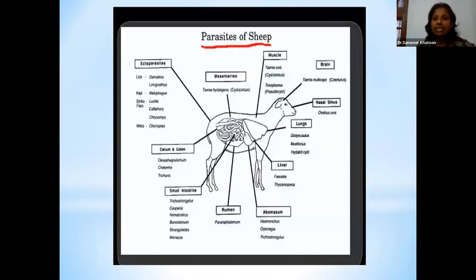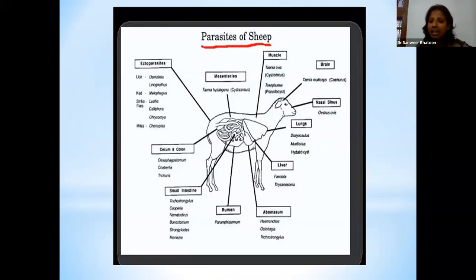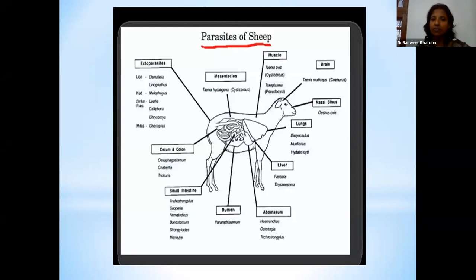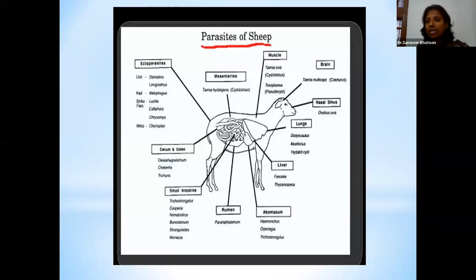Sheep are known as the storehouse or museum of parasites — each and every organ of the sheep's body, whether it is the GI tract, reproductive tract, respiratory tract, or any internal vital organs, they are not left uninfected by parasites. Along with that, even the external surfaces are affected by various ectoparasites, and the nasal and facial sinuses by different bots. This slide gives a clear idea of the important parasites always present in these two groups of animals.